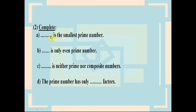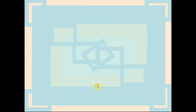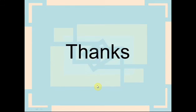What is the smallest prime number? Two is the smallest prime number. What is the only even prime number? Two is the only even prime number. What is the number which is neither prime nor composite? It is one, because one has only one factor, while a prime number has only two factors.